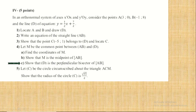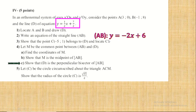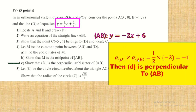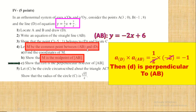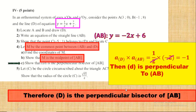Show that D is the perpendicular bisector of segment AB. To prove perpendicularity, the product of slopes must equal -1. The slope of D is 1/2, and the slope of AB is -2. Their product is (1/2) × (-2) = -1, so D is perpendicular to AB. Since D passes through M, the midpoint of AB, D is the perpendicular bisector of segment AB.